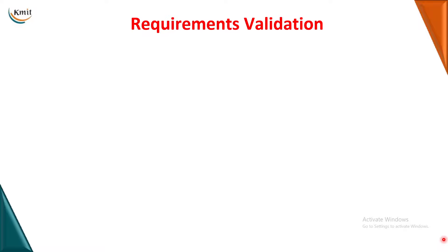In the last two sessions related to chapter 2 of unit 2, we have learned about the requirements engineering process, which involves various steps. We started with feasibility study, which tells you whether you can move forward with the development of the project. Once decided, we move to the next step, which is requirements elicitation, where we talk about how to gather requirements using various methods.